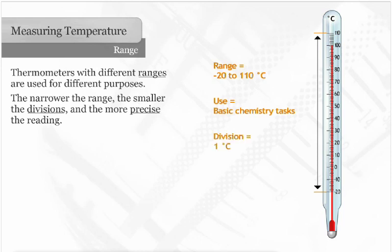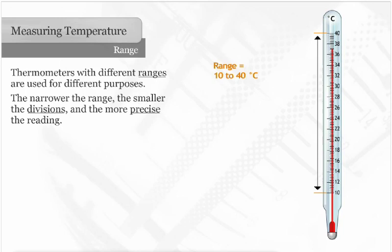They generally have one degree divisions. 10 to 40 degrees Celsius thermometers with two-tenths degree divisions are used when exact readings are required, such as finding the temperature change of a solution being cooled.